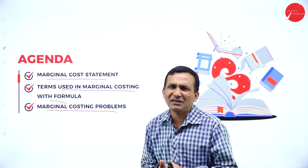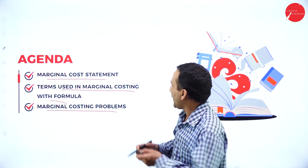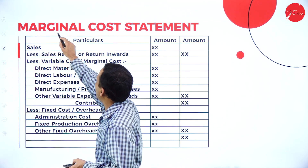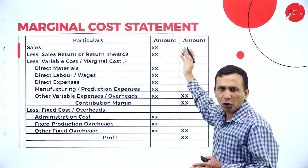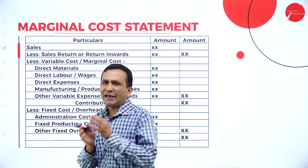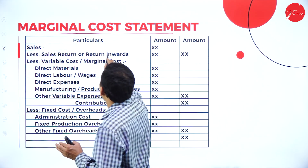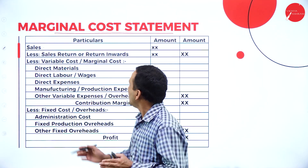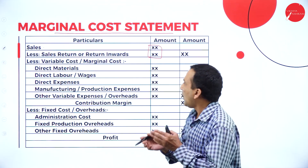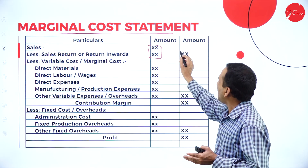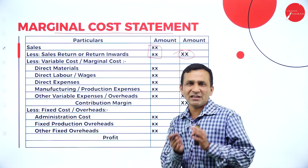Using marginal costing, decision-making is very easy. The format related to the marginal costing statement has an inner column and an outer amount column. The first item is sales. In case the question has sales returns or return inwards clearly given, we need to subtract those from gross sales. If you subtract sales return or return inwards from gross sales, whatever we get is called net sales. If it is not given, no problem — we can directly consider that figure as sales.